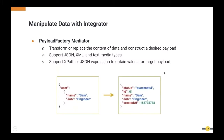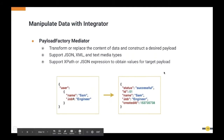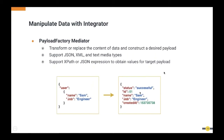Next is the Payload Factory Mediator. If you need to create a text, XML, or JSON payload based on received data, or manipulate fields of the received payload — for example, converting one JSON format to another — you can use the Payload Factory Mediator. This mediator supports XPath and JSON expressions to obtain values for the target payload.